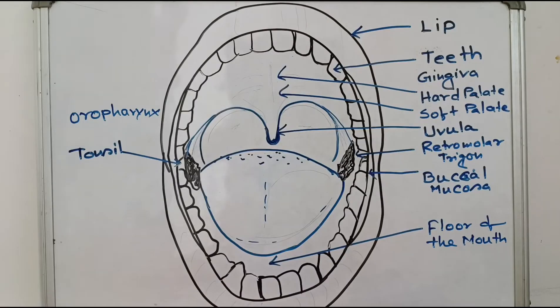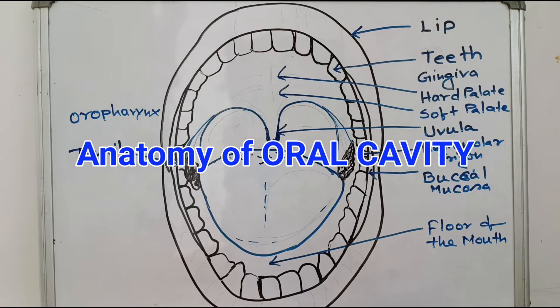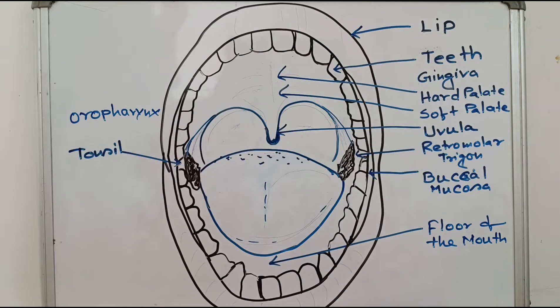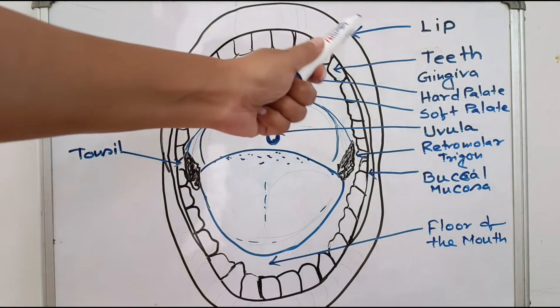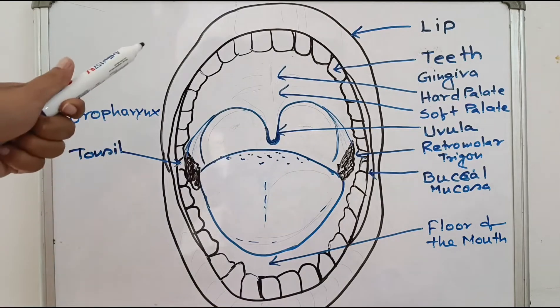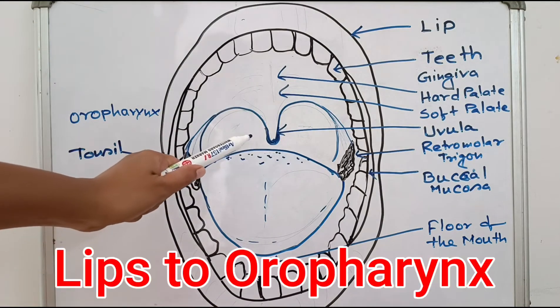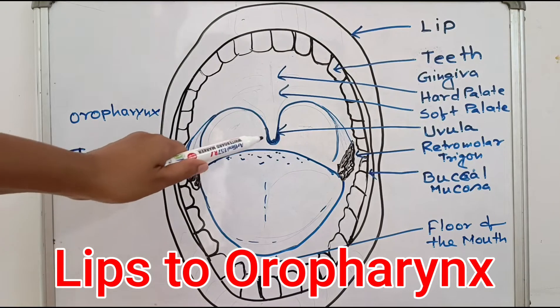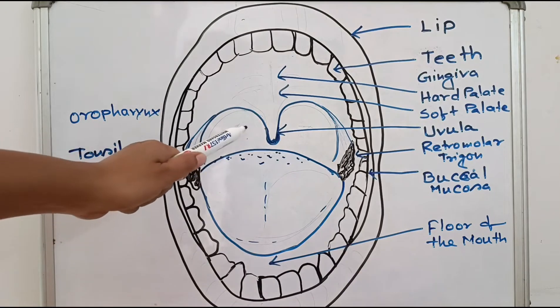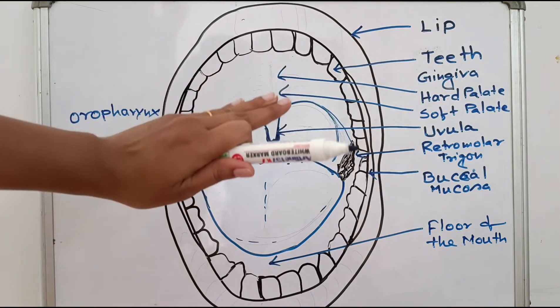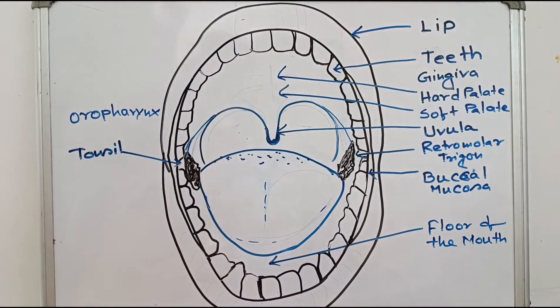You have to know the oral cavity anatomy. The oral cavity extends from the lips up to the oropharynx. This is the oropharynx — this is the darkened area of the oral cavity. If you put a light source, you can check the oropharynx.